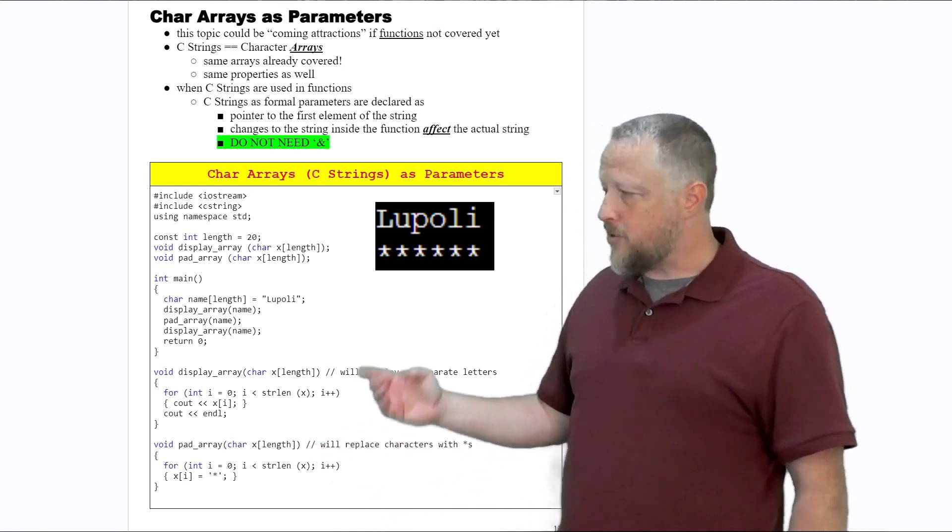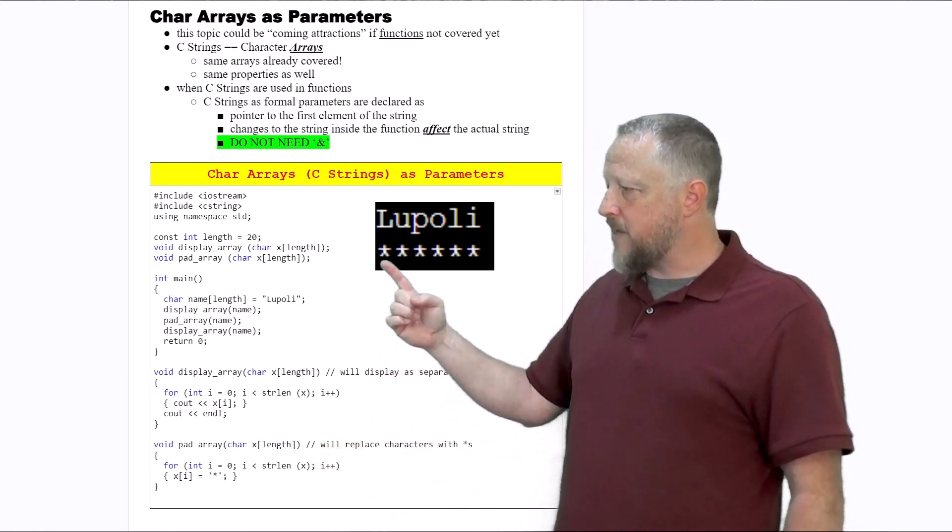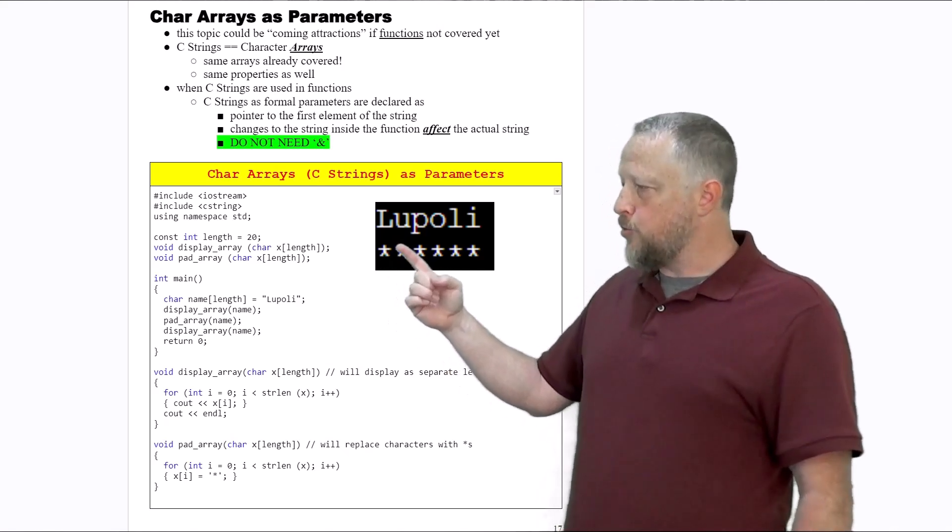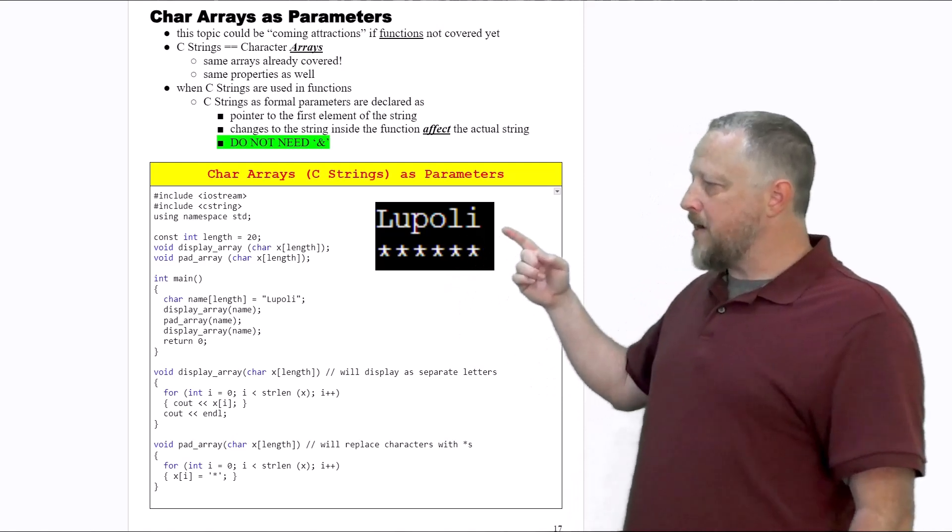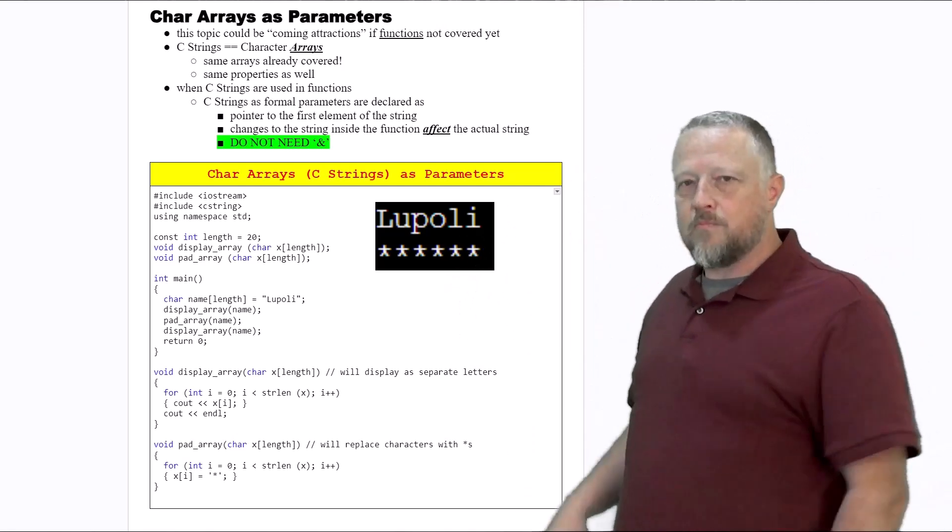Remember, by the way, it uses strlen again. So it's going to look at L, replace that with a star, U with a star, P replace, O all the way down. And then when it hits that backslash zero, it goes 'ah, we're done.' So it'll stop right at that spot.